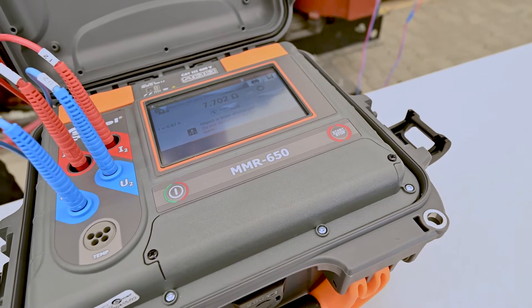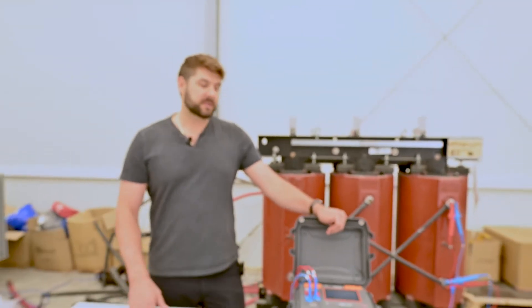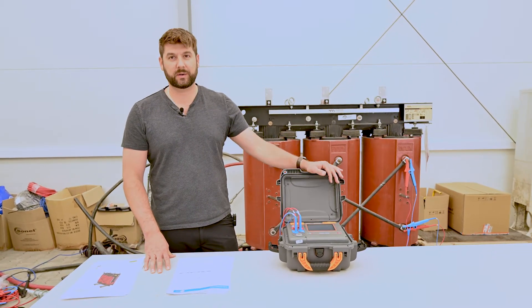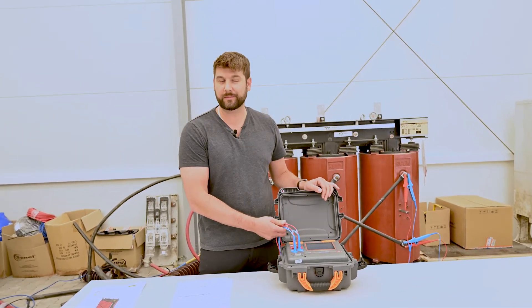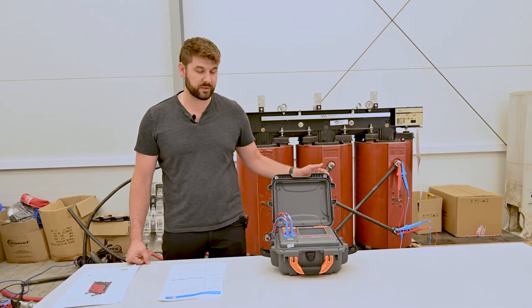And finally we have our third resistance and it's been discharged. This is an example of how you can use a single phase 10 amp micro-ohmmeter with one measurement channel to measure all six windings on a distribution transformer.